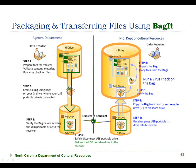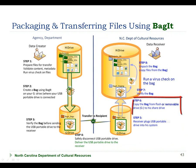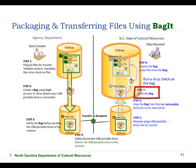There are basically three steps involved for the data receiver to receive, verify, and unpack the bag, illustrated on our slide as steps 6, 7, and 8. The receiver will first copy the bag from the remote disk device to her local disk. Then she will verify that the bag's contents are valid, meaning that the files have not been corrupted or altered through the course of the transfer. And finally, in step 8, she'll unpack the bag to get the files out of the bag for her local use.